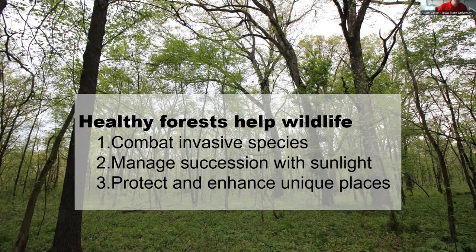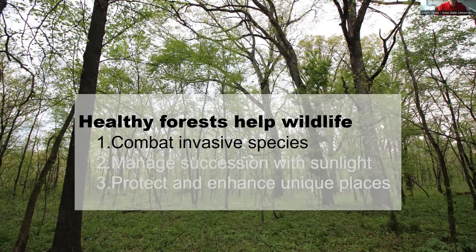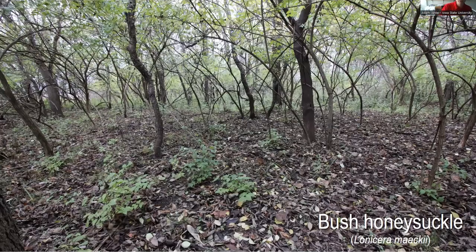To do that, we're going to do three things: combat invasive species, manage succession with sunlight, and protect and enhance the unique places on our property that may have a disproportionate impact on wildlife. First, combating invasive species. There are lots of different invasive species to choose from. The one I hate more than all others is bush honeysuckle — scientific name Lonicera maackii, also called Amur honeysuckle — along with Tartarian honeysuckle and other exotic shrub-forming honeysuckles from southeastern Asia.